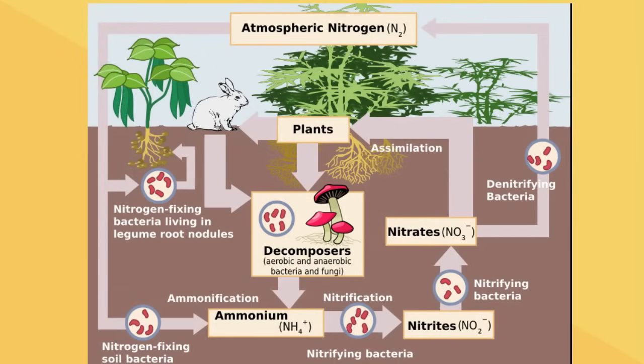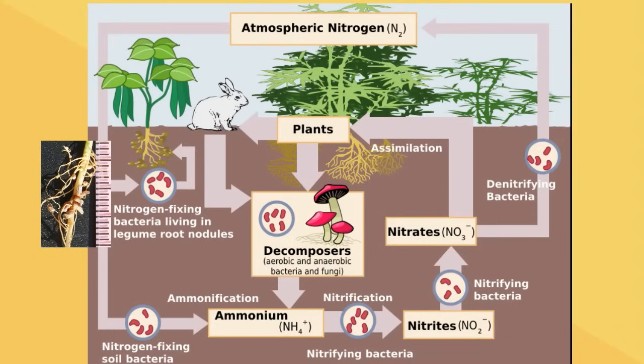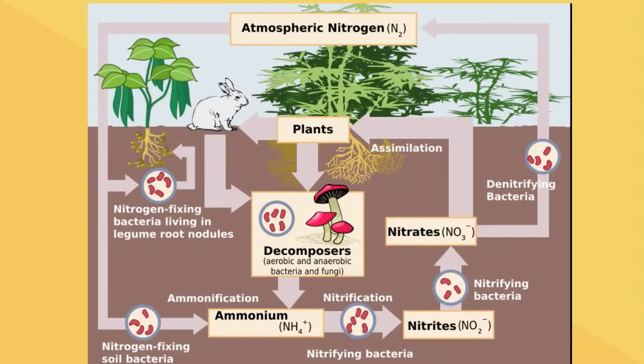Once in the soil, nitrogen finds its way to bacteria on the roots of plants. At the roots, the nitrogen is combined with hydrogen to make ammonia in a process called nitrogen fixation.